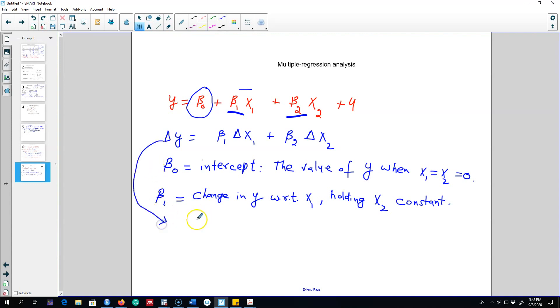Looking at this formula we can write it down as the change in y caused by change in x1 that is equal to beta 1. We have to assume that x2 is not changing, it is constant. That is what this holding x2 means.